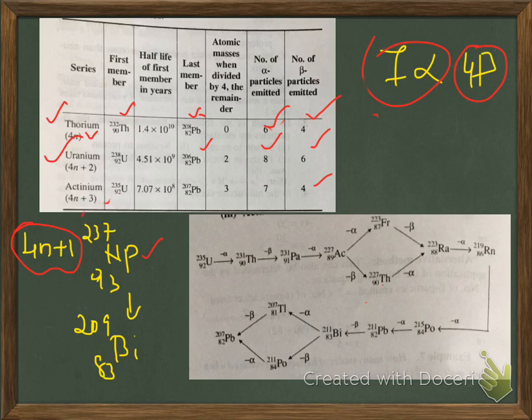In the actinium series, that is the 4n+3 series, uranium-235 is the first element and it continues the disintegration process until it reaches lead-207. During this process, they have to emit 7 alpha and 4 beta particles.